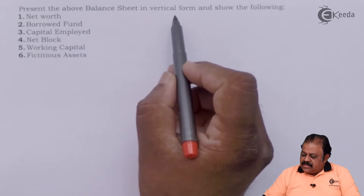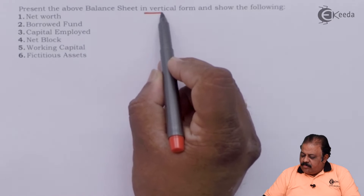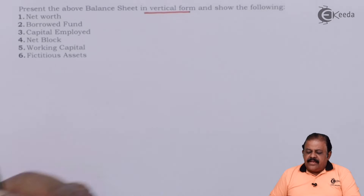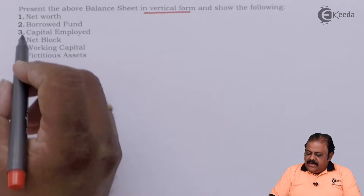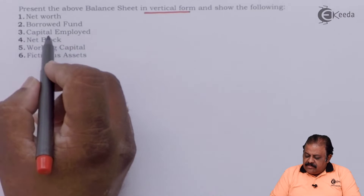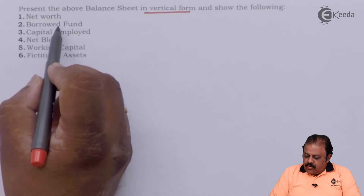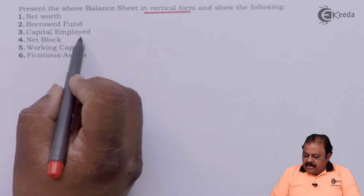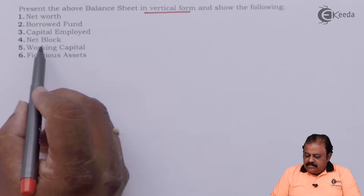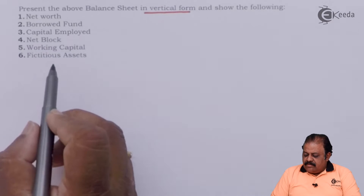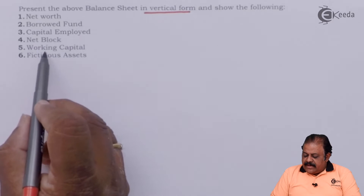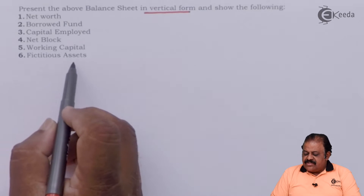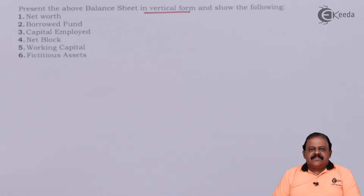Present the above balance sheet in vertical form and show the following: net worth, borrowed fund, capital employed, net block, working capital, and fictitious assets.